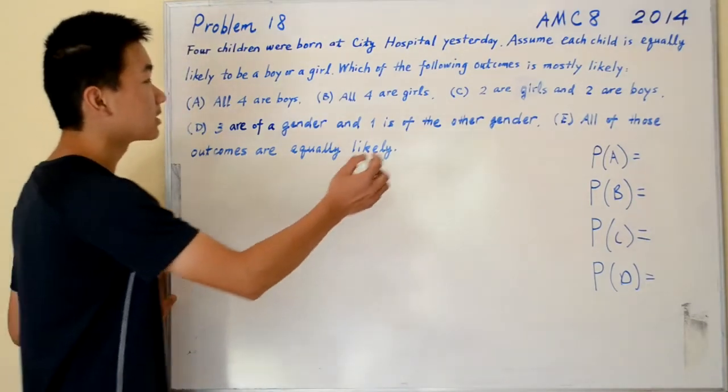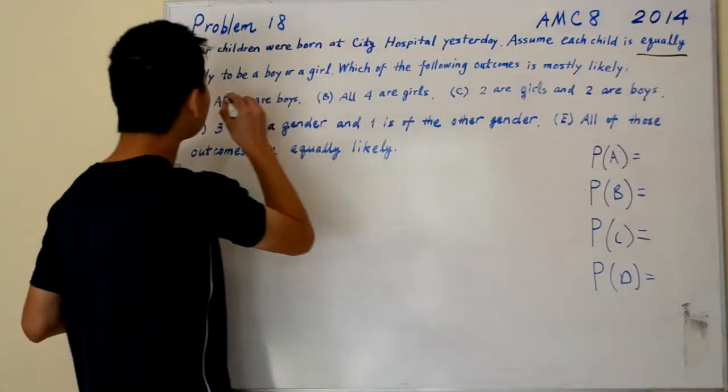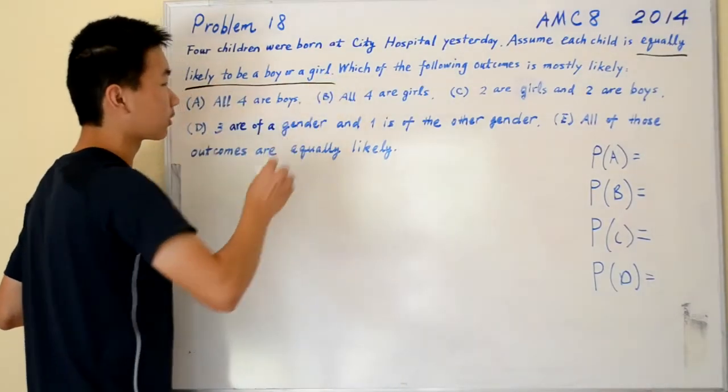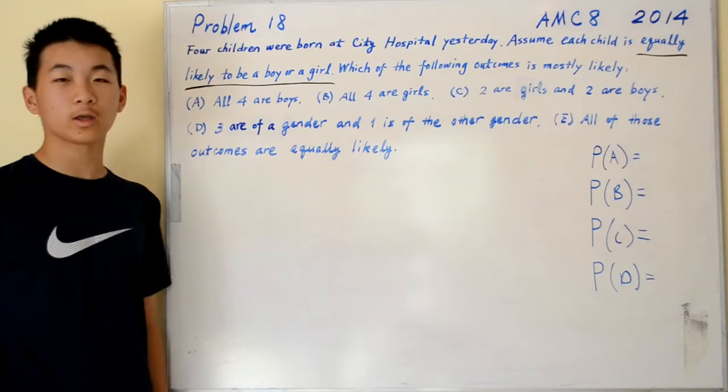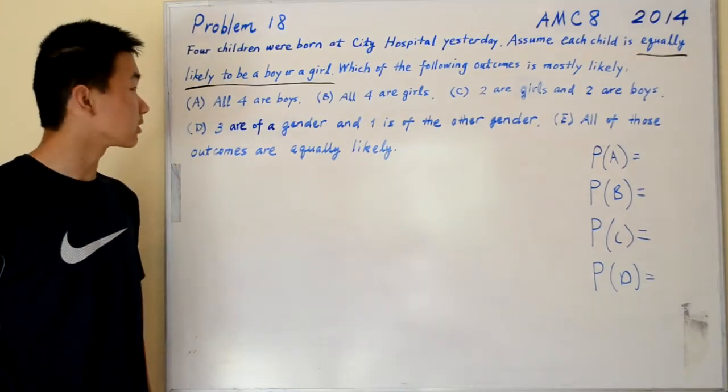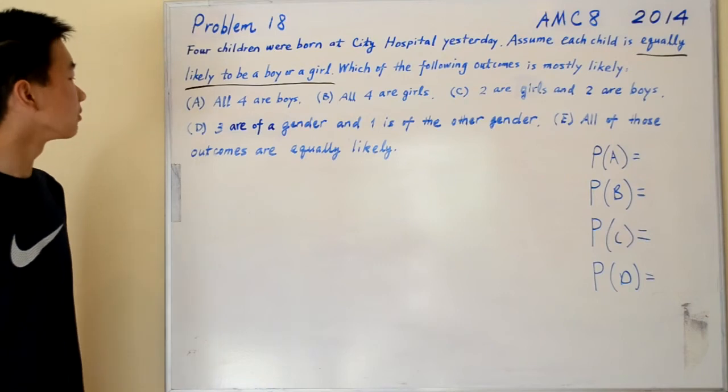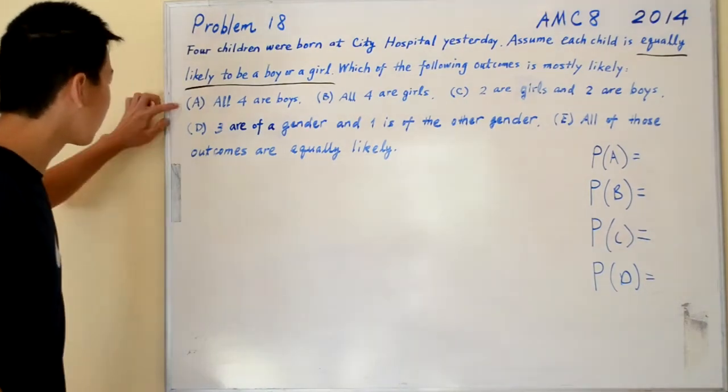The problem says that each child is equally likely to be a boy or a girl. So that means that the probability that a child is a boy is one half, and the probability that the child is a girl is also one half. Let's start with choice A.